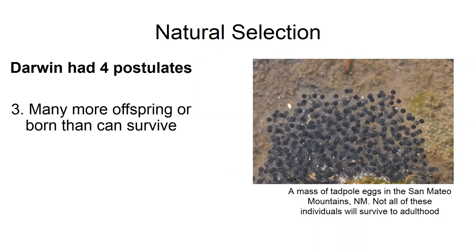Darwin also realized that many more offspring are born than can survive. This is a mass of tadpoles — very few of these tadpoles will ever survive to becoming an adult. This is also being influenced by Malthus, who realized that every population is capable of exponential growth, yet we're not covered in frogs worldwide. So lots more are born than can survive.